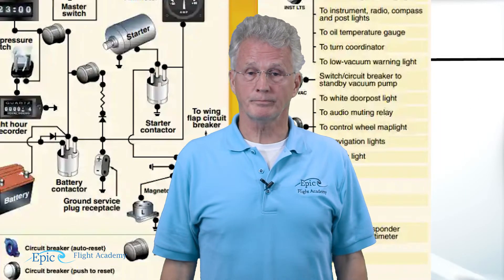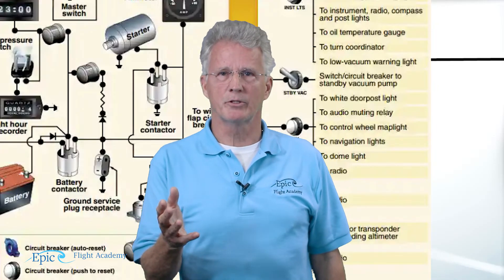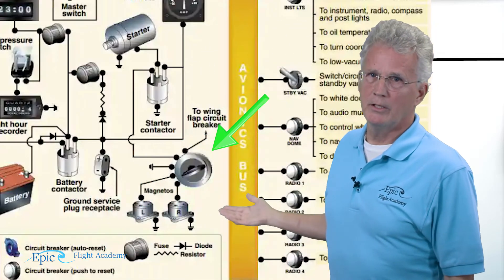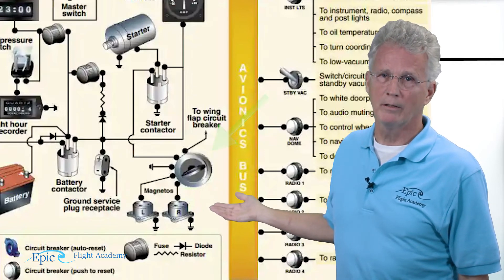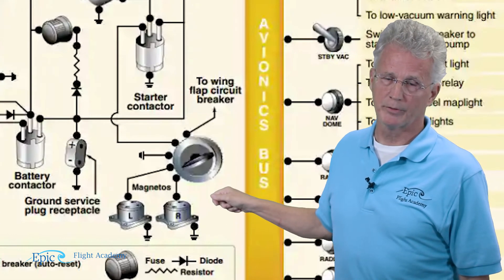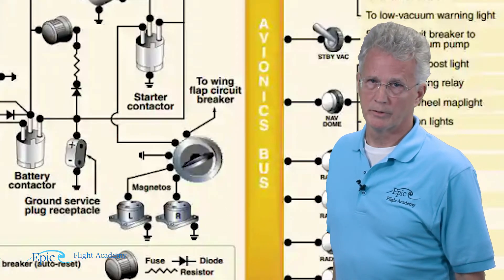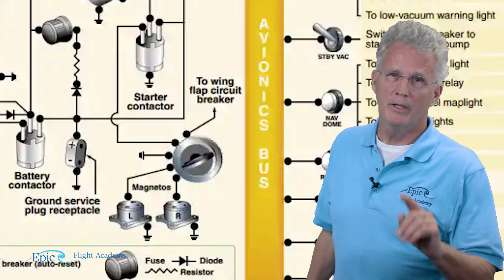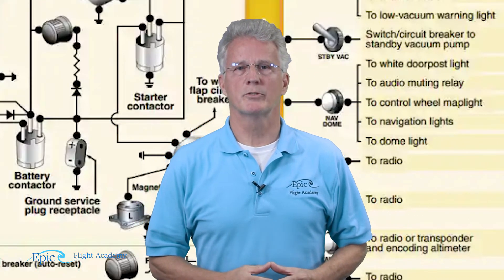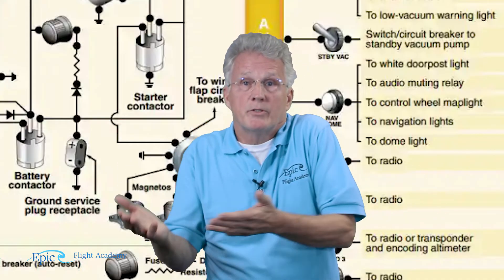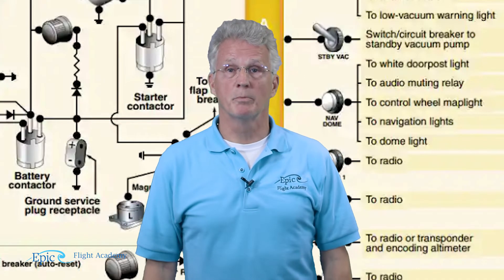Now the last thing we want to take a look at on your schematic is the key switch. Notice the key switch - if you look at it carefully, it's got a start position and it's got left and right mag positions. This leads to a little bit of confusion. Sometimes students look at this schematic and they say, 'Oh well, I see the magnetos here on the electrical schematic, therefore the magnetos must be part of the electrical system.' No, that is not true.